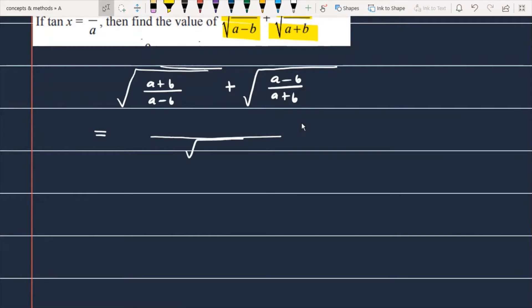In this given expression, I am taking the LCM. When you take the LCM, you will get a²-b² in the denominator. The numerator terms are (a+b) and (a-b). If I simplify this expression further, you can see that b cancels with b in the numerator, giving you 2a.